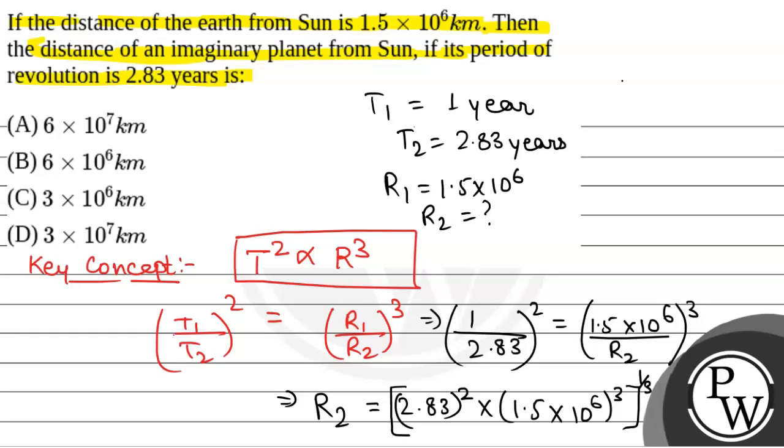On solving we will get r2 as 3 into 10 to the power 6 kilometer. The correct option will be option C, 3 into 10 to the power 6 kilometer.